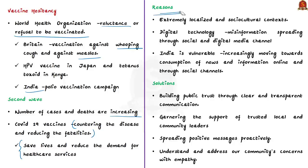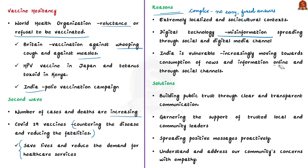Vaccine hesitancy is a very complex phenomenon with no easy answers. It is often extremely localized to a region and has social and cultural context as well. However, today's digital technology has given this vaccine hesitancy new momentum. Misinformation spreading online through social and digital media channels has heavily contributed to vaccine hesitancy. India is particularly vulnerable to this challenge because we are increasingly moving towards consumption of news and information online and through social channels, which can adversely impact public trust.